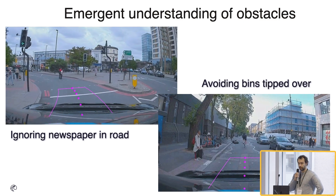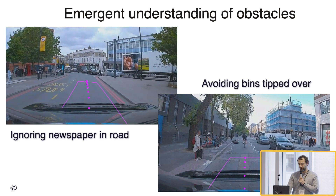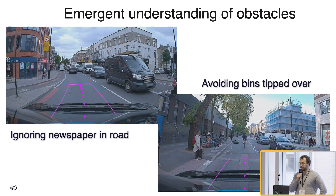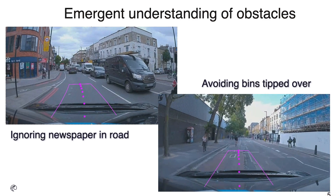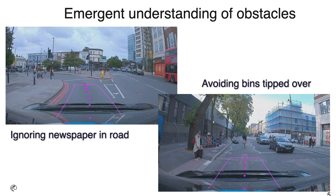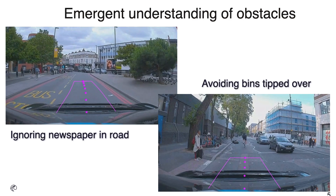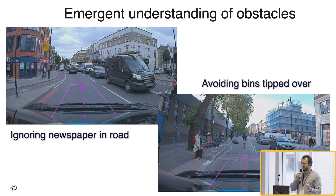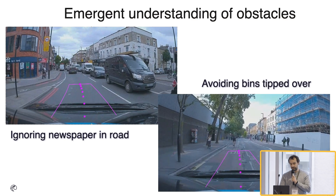Here are a few emergent properties — things we did not teach the model to do. You can see that on the top left, the model just goes over a newspaper on the road, whereas on the right, it nicely avoids a trash bin that was tipped over. We were not segmenting anything; we don't have labels for newspapers or trash bins. The model just learned it from demonstrations, and it's unlikely that we had a demonstration of a newspaper in that specific location. So you see it starts to show capabilities that are surprising even to us as developers.